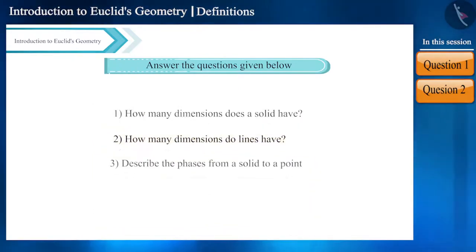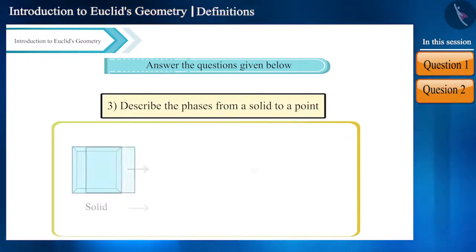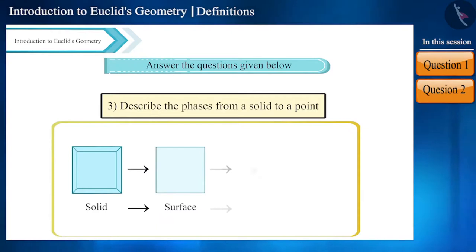Third question. Friends, we know the phases from a solid to a point. Boundaries of a solid is a surface. Boundaries of a surface is a line. And line ends in a point. Therefore, the phases will be solid, surface, line and point.